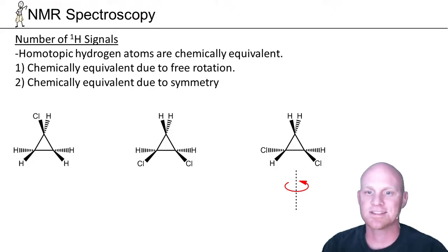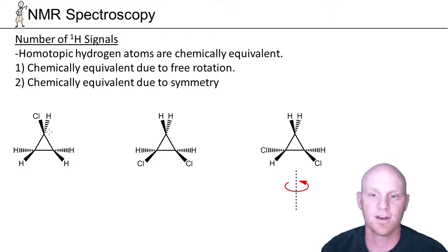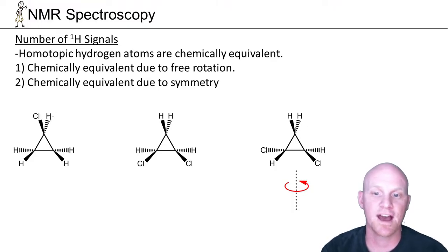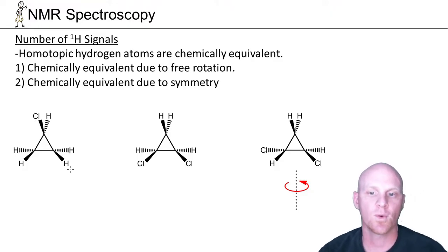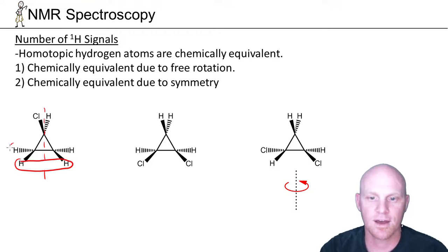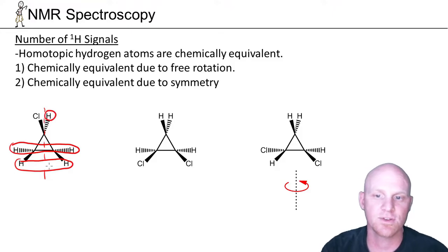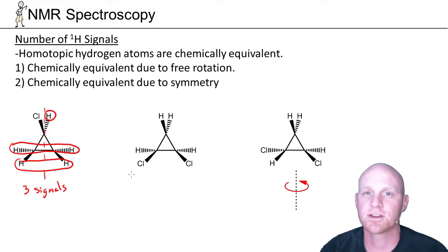Now let's look at cyclopropane examples. Since we're on a ring, wedged and dashed hydrogens don't have to be equivalent. With a chlorine on the wedge position but only a hydrogen on the dash, the wedges don't match the dashes — no front-to-back symmetry. We do have a plane of symmetry down the middle, making both wedged hydrogens equivalent and both dashed hydrogens on the two carbons equivalent. But wedges are not equivalent to dashes. Including the remaining hydrogen, there are three unique environments and three signals.